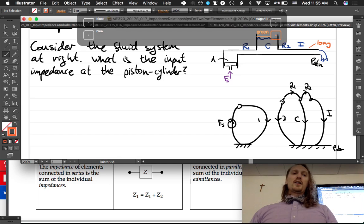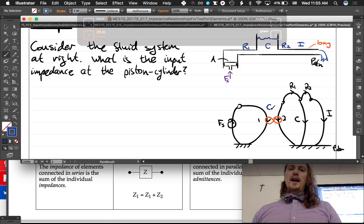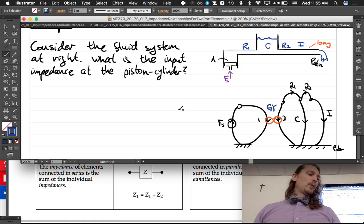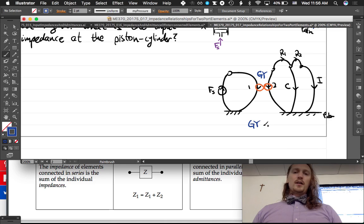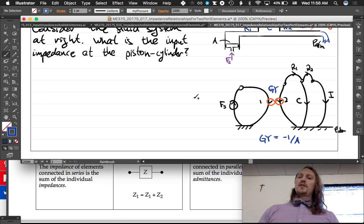So I'm just going to, and the gyrator is going to have a gyrator ratio of one, or actually, so GY equals, so the convention is to say GY is equal to negative one over A. The book has a little discussion about that. It's just a convention on the negative sign. There's no need for it, necessarily.